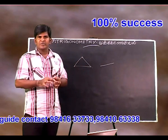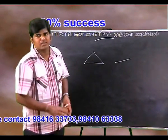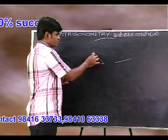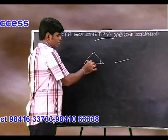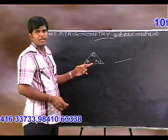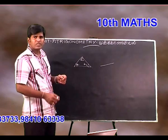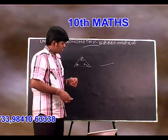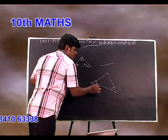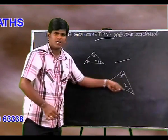Now we have to talk about the triangle. The triangle has angles a1, a2, a3. The sum of these three angles is 180 degrees.